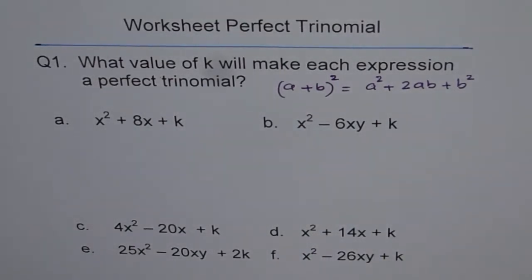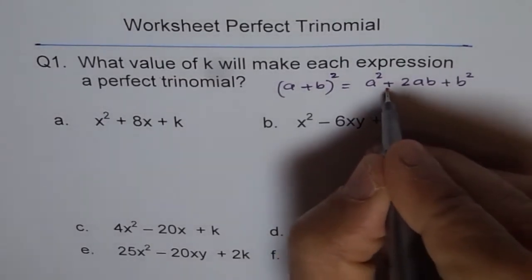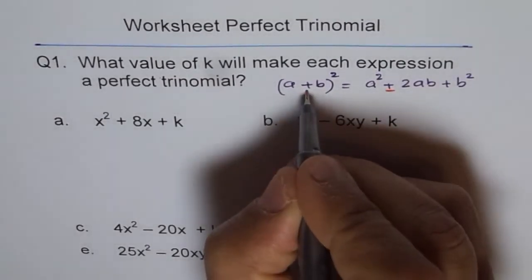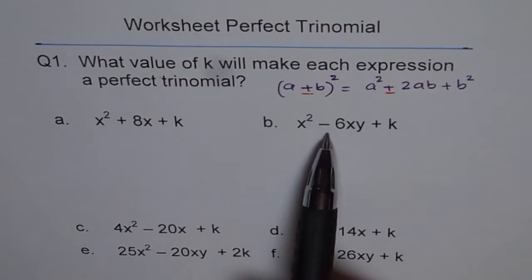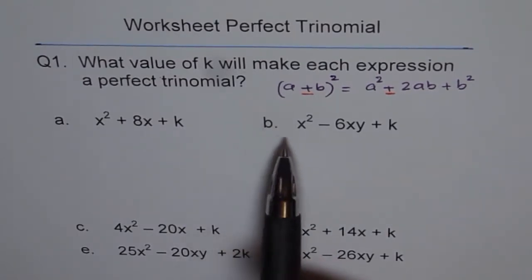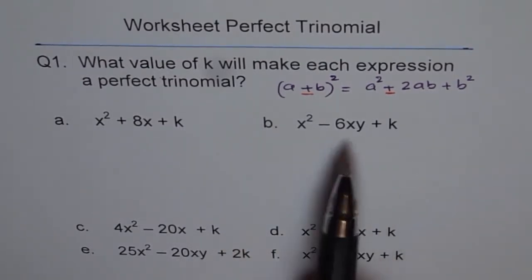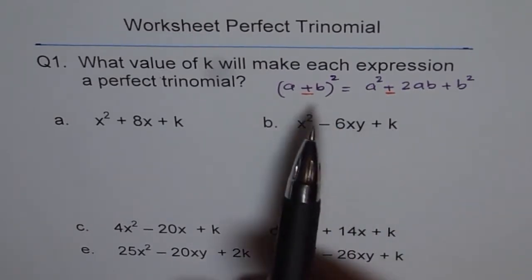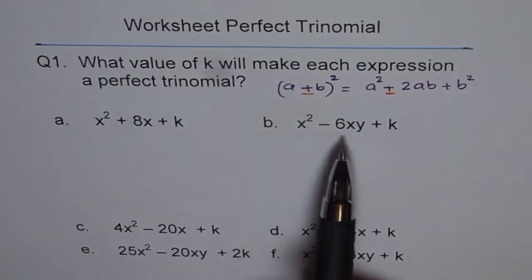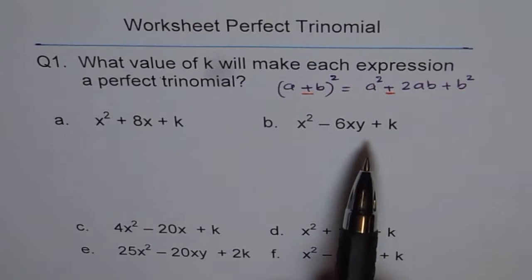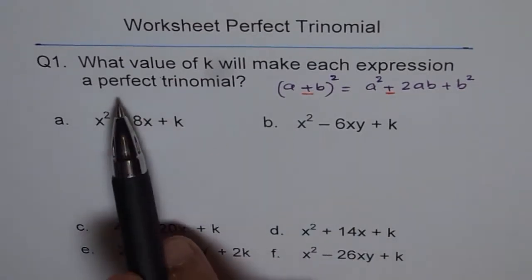You could also have a minus sign, and it would still be a perfect trinomial — in that case it becomes (a − b)². So whenever a trinomial can be written in the form of (a ± b)², we call it a perfect trinomial.